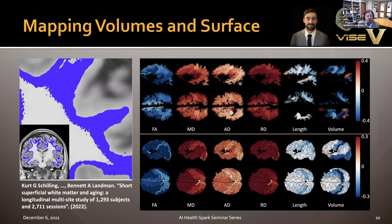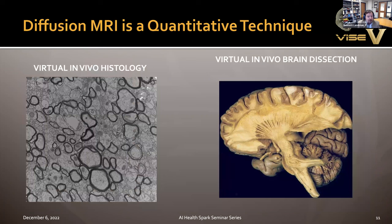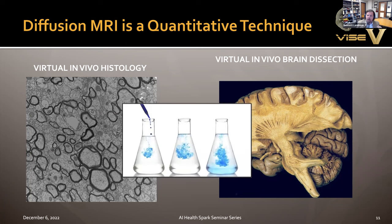The changes are rich, subtle, and spatially non-coherent — there are spatial patterns in what's happening. Diffusion MRI is a quantitative technique. Our idea is to create something called virtual in vivo histology, mapping local environments as seen in electron microscopy, or virtual in vivo brain dissection, mapping extended connections. We do that by watching the natural thermal motions of water, sensitizing our MRI images to that motion.